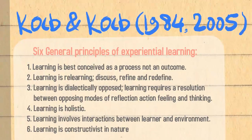Moving on to Kolb — more recent researchers who looked at the works of Dewey, Piaget, Young and Rogers, who we've all talked about in this course. Kolb generated six general principles of experiential learning. Learning is best conceived as a process, not an outcome. Learning is relearning as you discuss, refine and redefine, which is what we do in a tutorial when we talk to our colleagues. Learning is often dialectically opposed, meaning it requires a resolution between two opposing modes of reflection, action, feeling and thinking — the biographical gap that happens when experiencing something new. They also said that learning is holistic, involves interactions between the learner and the environment, and is constructivist in nature.